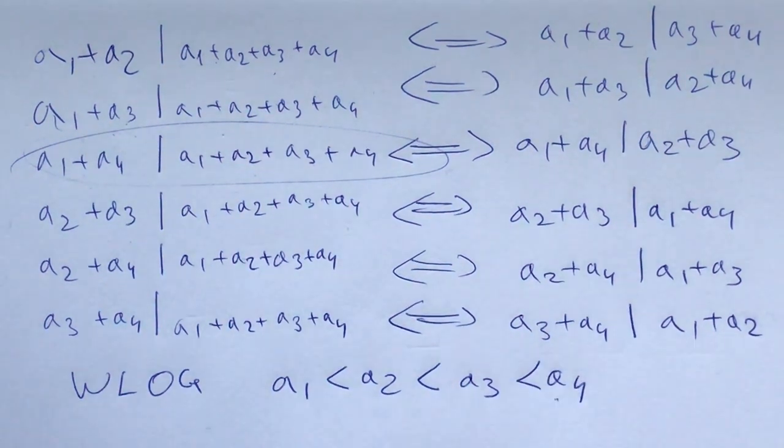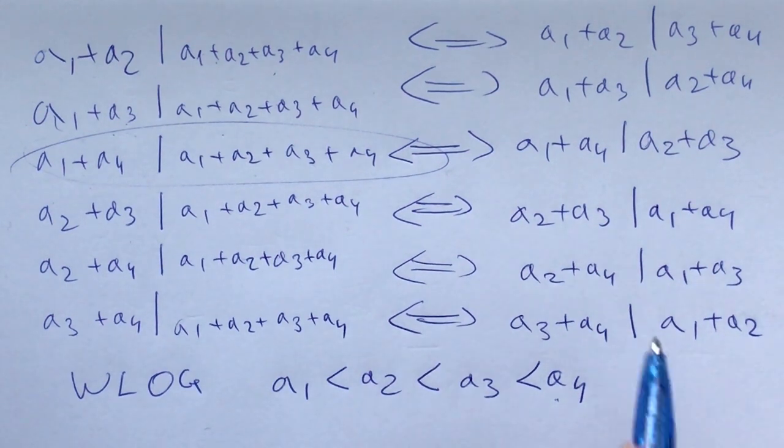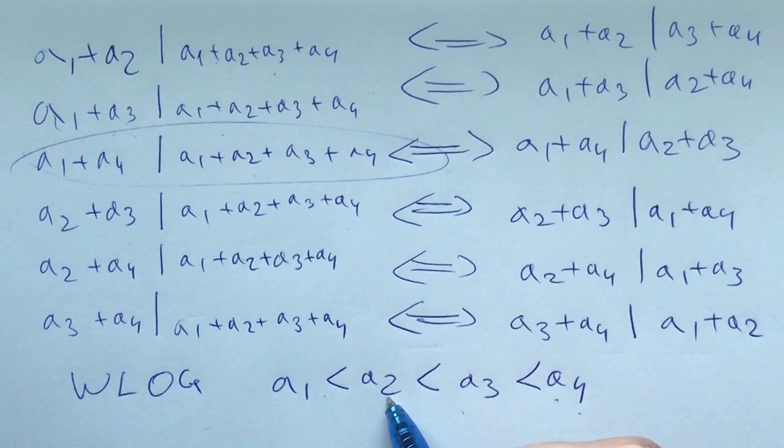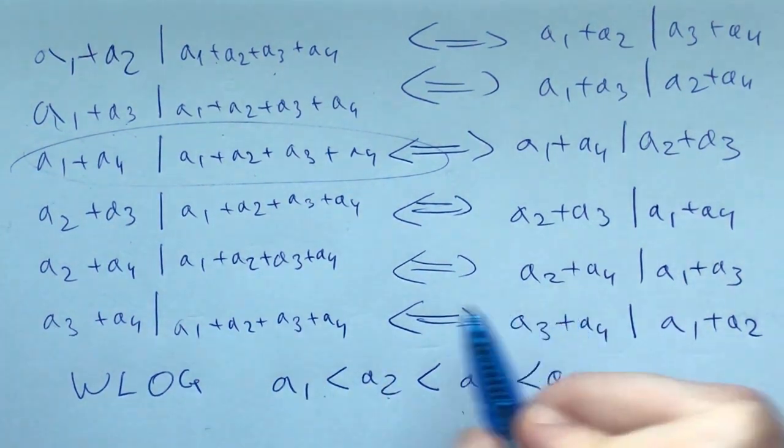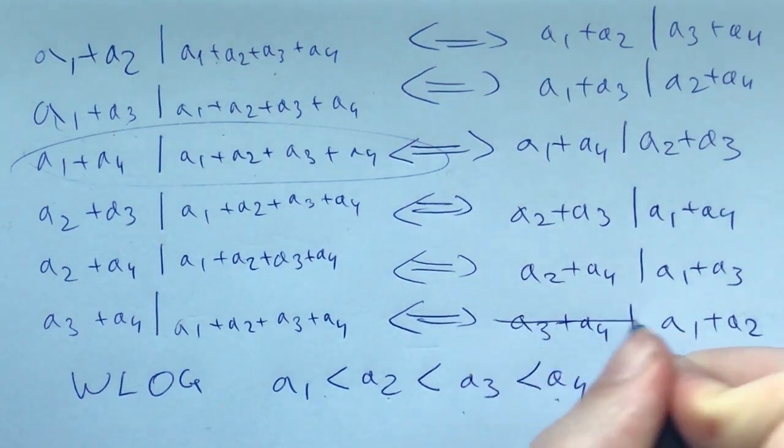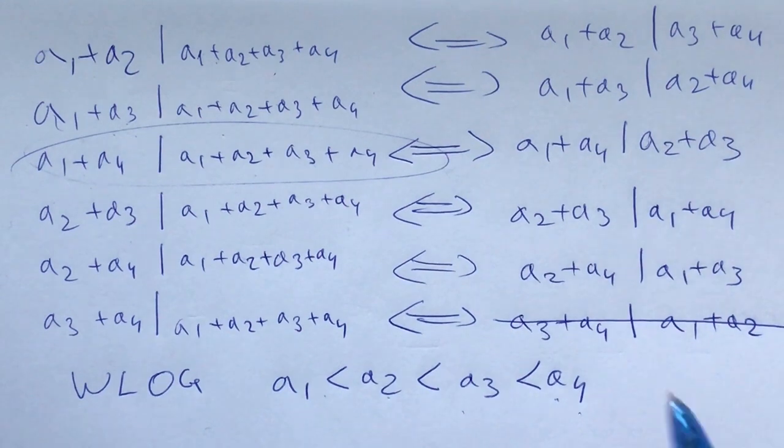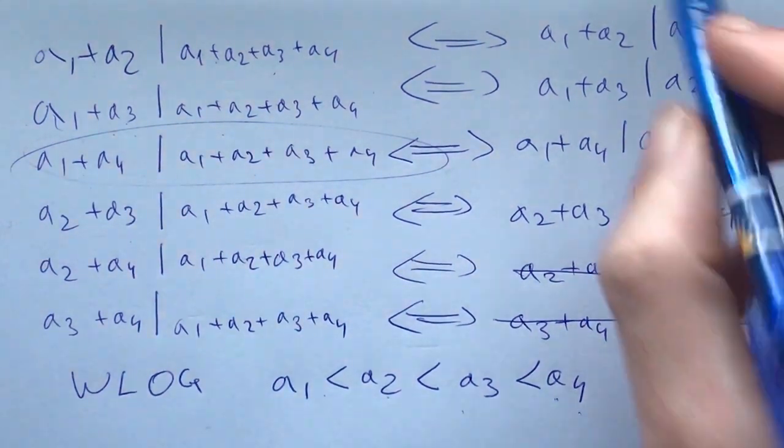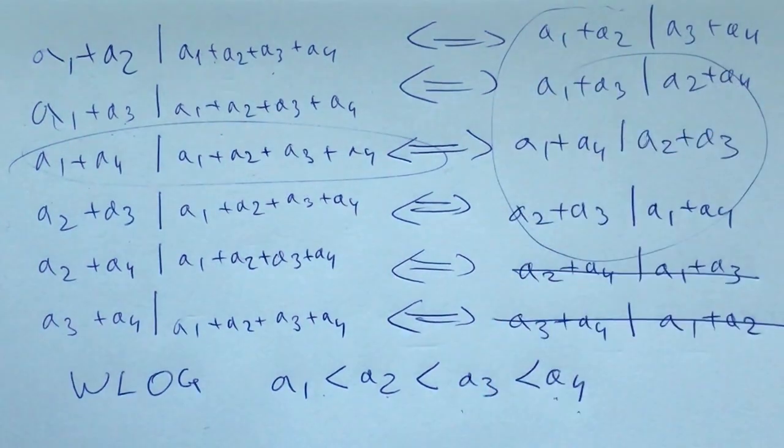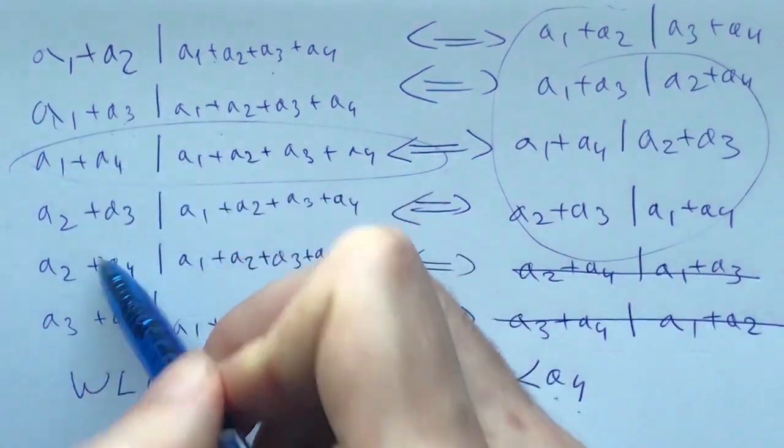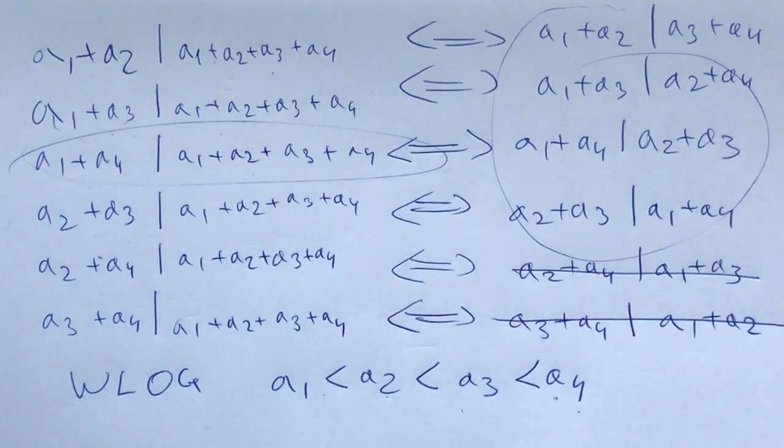Here this means that we can say without loss of generality that a1 < a2 < a3 < a4. We're not losing anything with this but we're gaining a ton. Namely, if a3 and a4 are greater than a1 and a2, then their sum is greater than their sum, and since these are positive integers that rules out this thing right here. In a similar vein, it also rules out this one right here.